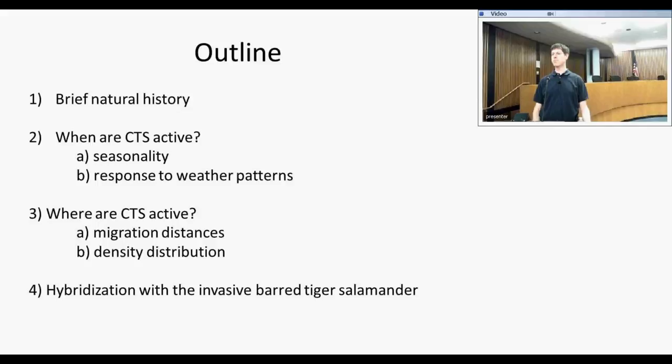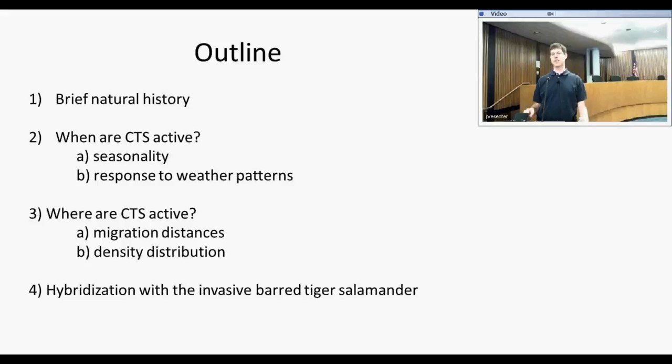A brief outline of my talk: first, I'm going to give a short summary of the natural history of the California tiger salamander. Then I'm going to talk about when CTS are active — on two different scales: what parts of the year they're active in, and within that, how they time their individual movements based on weather patterns. Then I'm going to go into where CTS are active in the environment. Finally, I'm going to discuss a mesocosm experiment looking at the community-level impacts of hybrid salamanders.